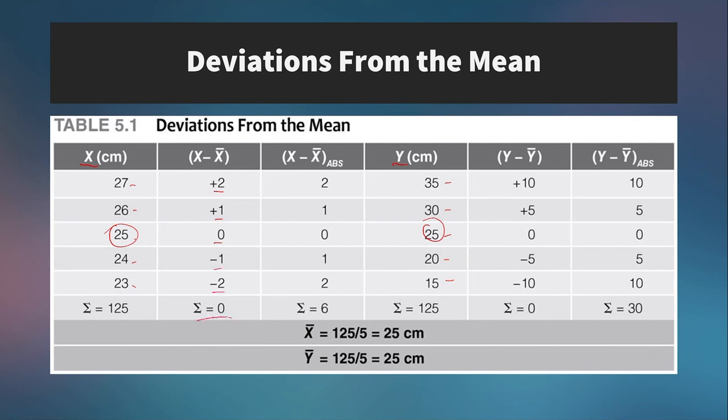Looking over at the Y column, we have the same thing, but notice that deviation scores are much larger. 10, 5, 0, negative 5, negative 10, but again they add up to 0. If we were to take the absolute value of these, then we would get 6 for the X values and 30 for the Y values.